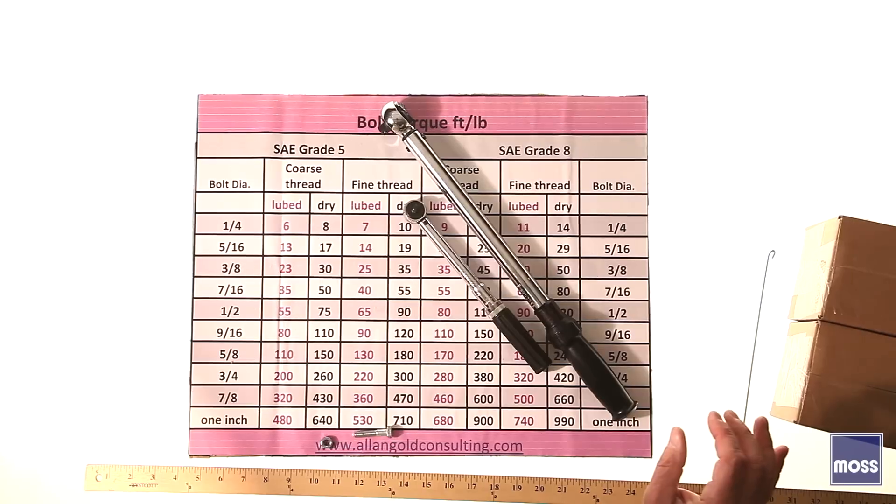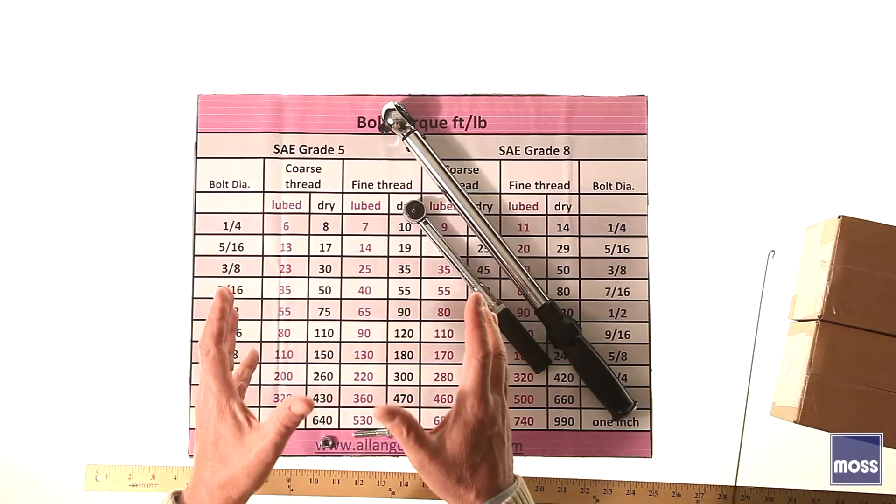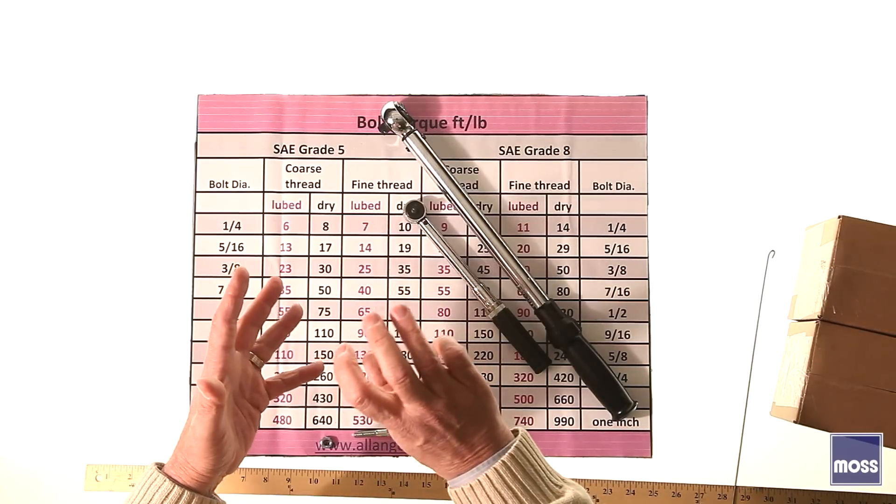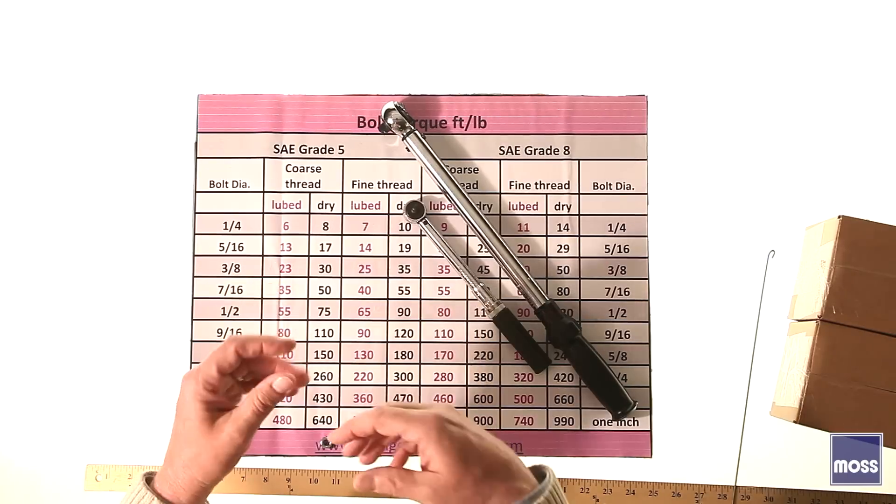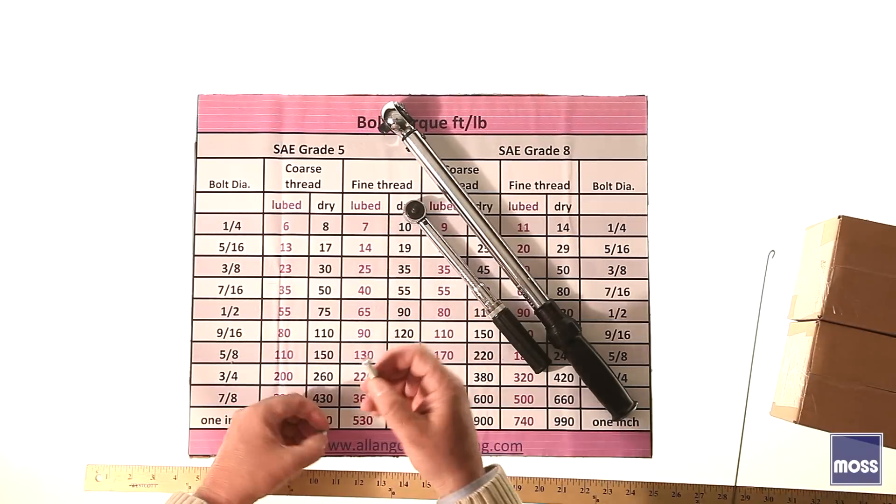When we understand that what we're really looking for is a clamping force, an entire door of opportunity opens up for us. We begin to understand things. We're looking for a clamping force, not a tightening. Before we cover what that all means, we need to understand one more thing: the concept of friction.